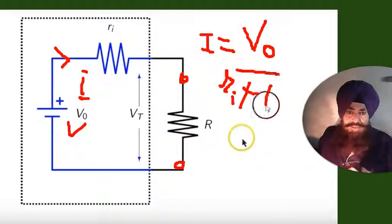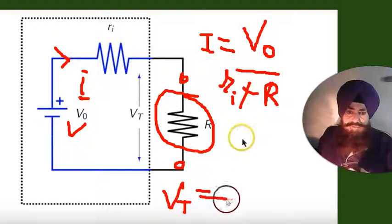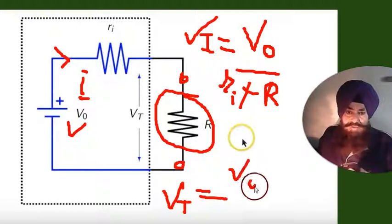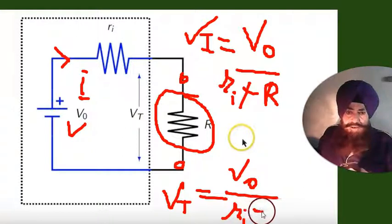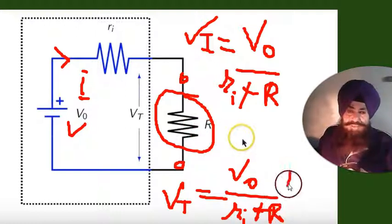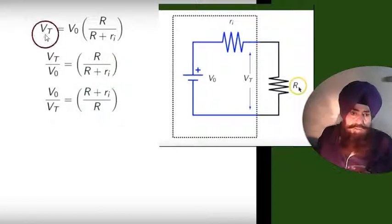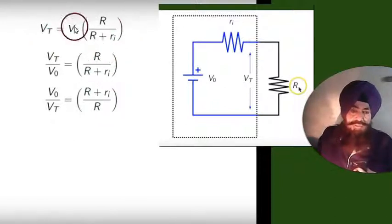This is the current flowing. The voltage drop VT equals this current — V₀ divided by (ri + R) — multiplied by R. Current times resistance gives voltage by Ohm's law. This is the equation for terminal voltage.